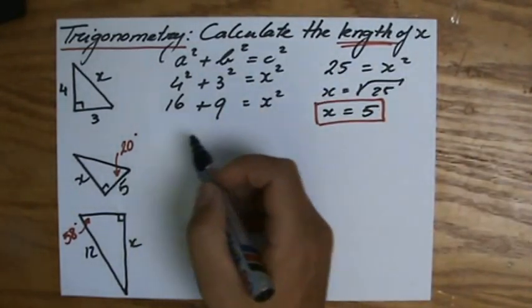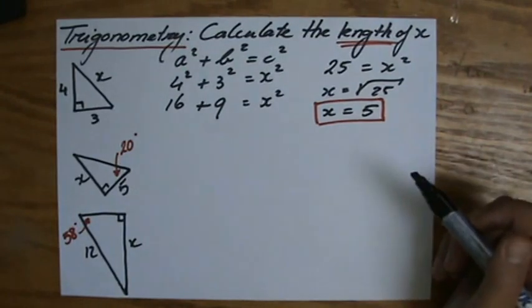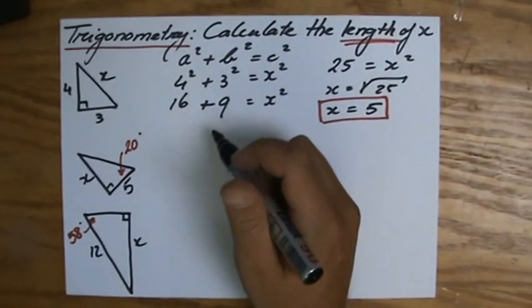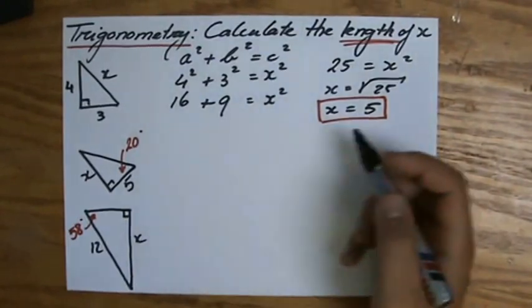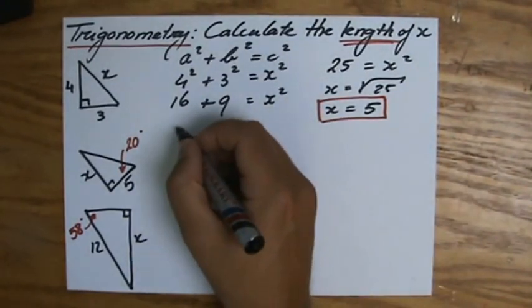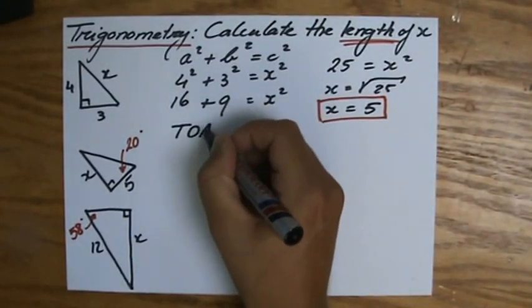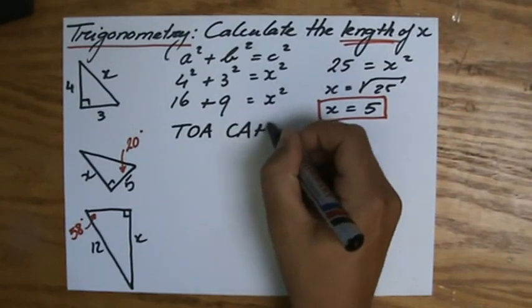Now, before you start, you always write down those ratios at the top of the paper, otherwise you might mess them up. And different books, different teachers use a different order, but I always write down TOA, CAH, SOH.